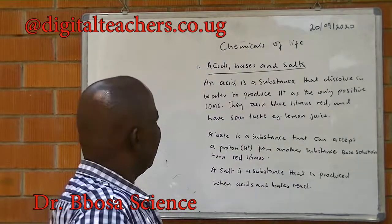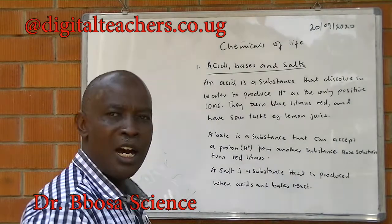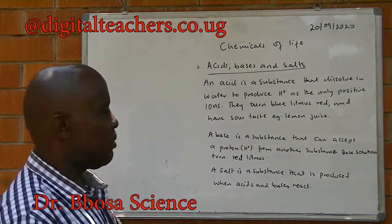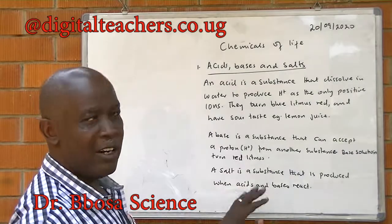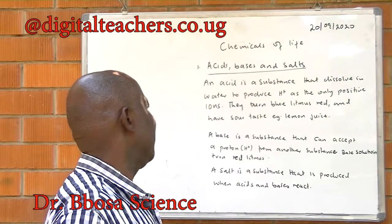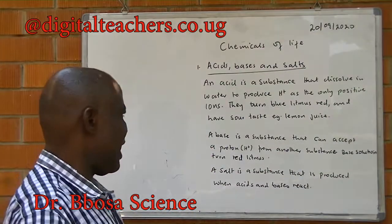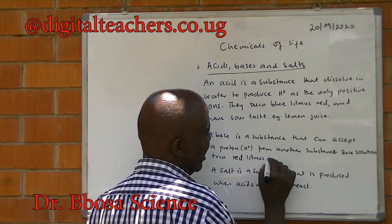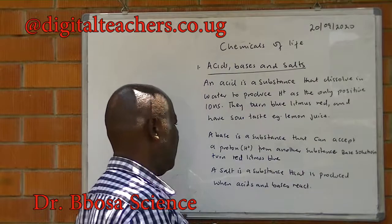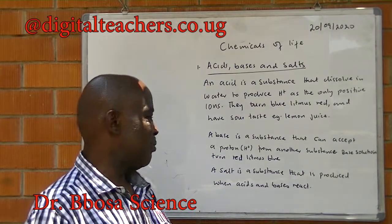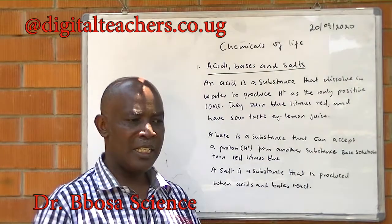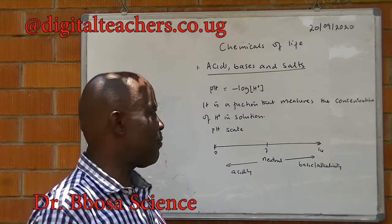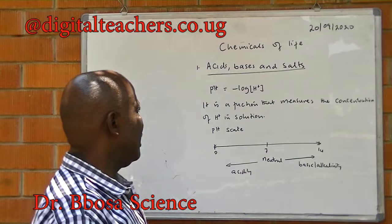Acid, base, and solutes. An acid is a substance that dissolves in water and produces hydrogen ions as the only positive ions in the solution. They turn litmus paper red. They have a sour taste. For example, lemon juice. A base is a substance that can accept a proton from another substance. The base solution turns red litmus blue. A solute is a substance that is produced when an acid and a base react. pH is the negative log of hydrogen ion concentration — a function that measures the concentration of hydrogen ions in the solution.